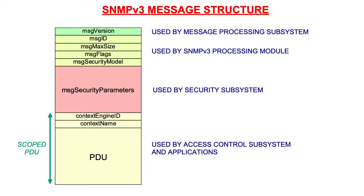This picture shows the SNMP version 3 message structure. Remember that SNMP distinguishes between messages and PDUs. The message is what is being transferred over the wire and can be inspected by tools such as Wireshark. The PDU is contained within the message and may be a GET, SET, INFORM, or TRAP. With SNMP versions 1 and 2 there were only two message fields: one for the message version and another for the community string. The SNMP version 3 message starts also with a field for the message version, used by the message processing subsystem. The next four fields — message ID, maximum message size, flags, and the security model — are used by the SNMPv3 processing module.